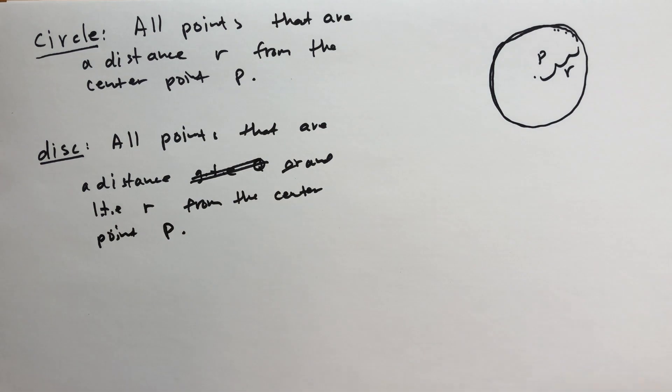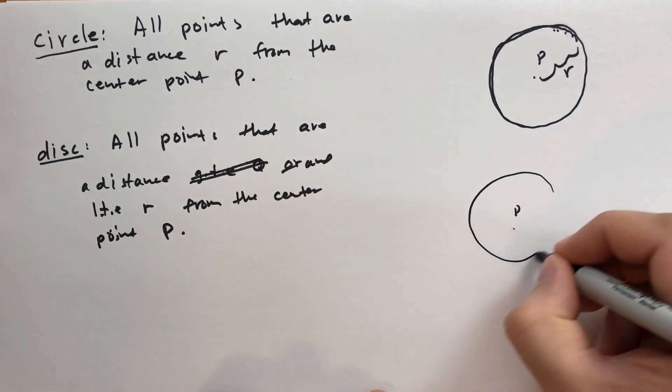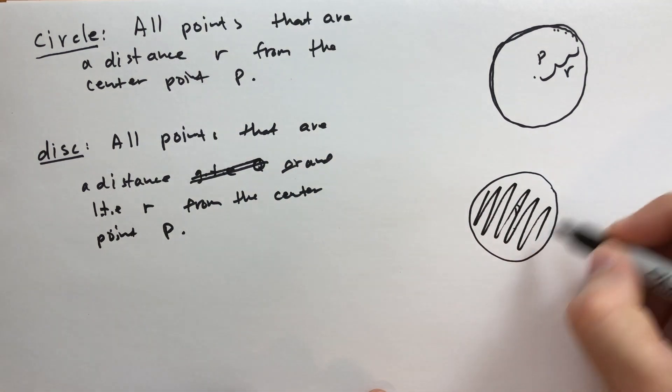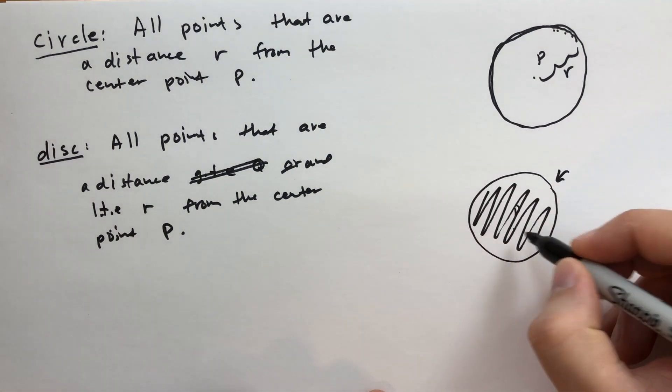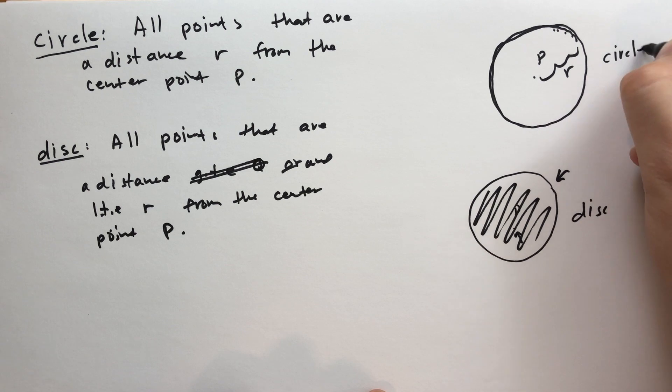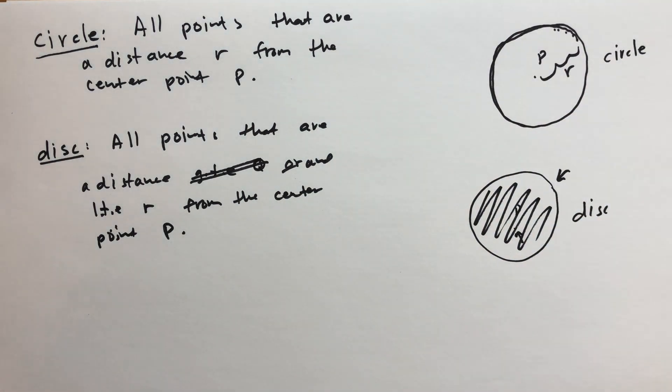So any point that is within, so we have point P, we have some distance R, all the points on the inside, including the edge, what we call the circle, and including the center. That is the disk. So the circle is just the ring around the edge, and the disk is the edge, the center, and everything in between.